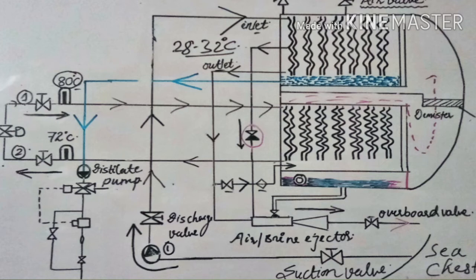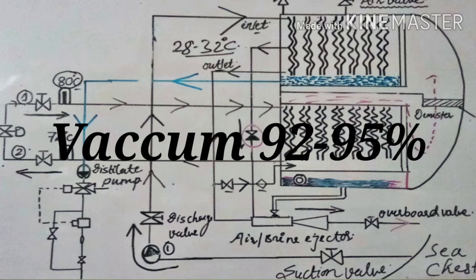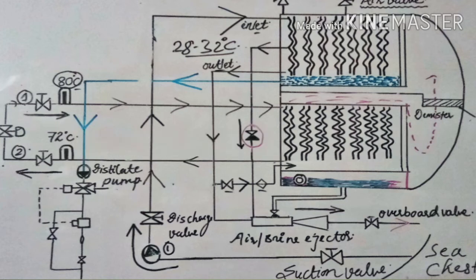Start the ejector pump and wait for the vacuum to build up inside the fresh water generator. When the vacuum reaches about 92 to 95 percent, open the feed water valve to feed sea water to the evaporator. Adjust the feed water pressure — normally a marking is provided on the pressure valve for the desired feed water pressure.